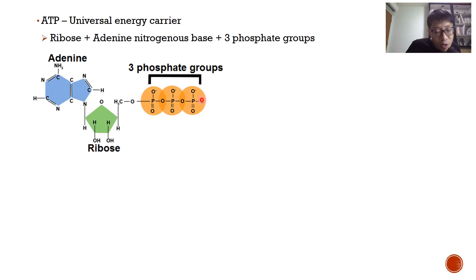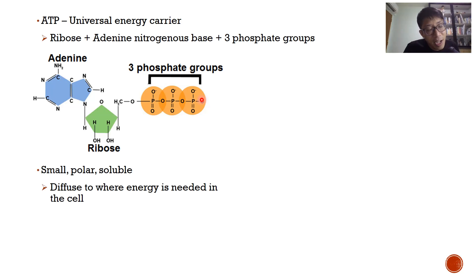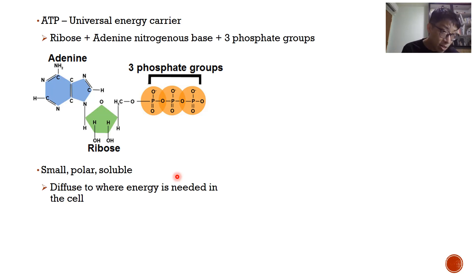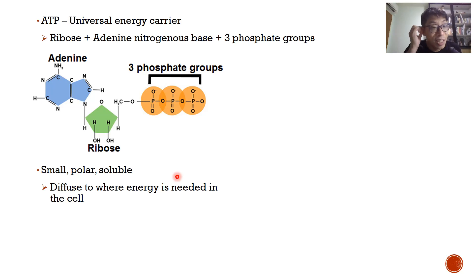Some properties of ATP that allow it to serve as a good energy carrier: first, it is small; second, it is polar — as you can see from the OH groups in the ribose and the negatively charged phosphate groups — and that makes it soluble in the cytoplasm. Being small and soluble allows it to diffuse throughout the cytoplasm to wherever energy is needed in the cell.